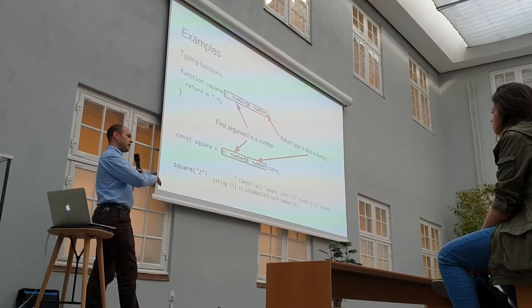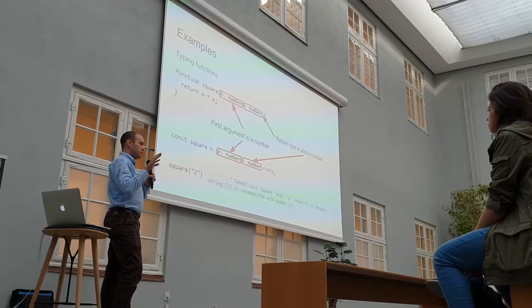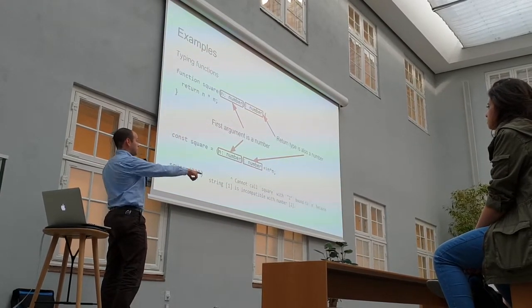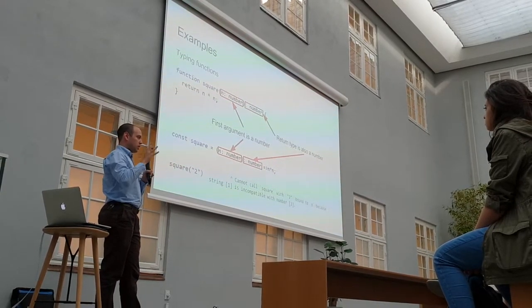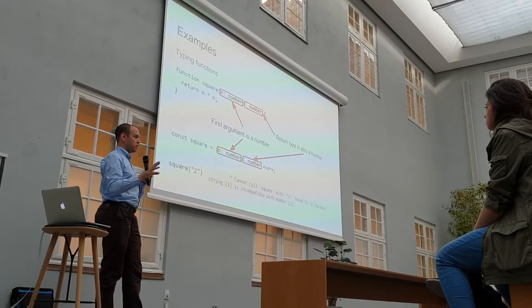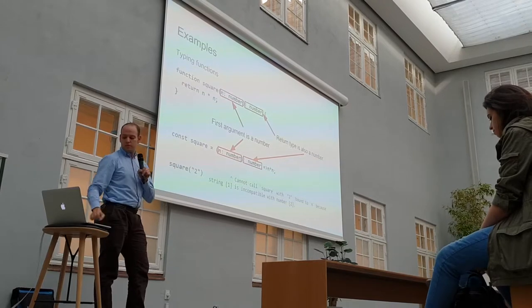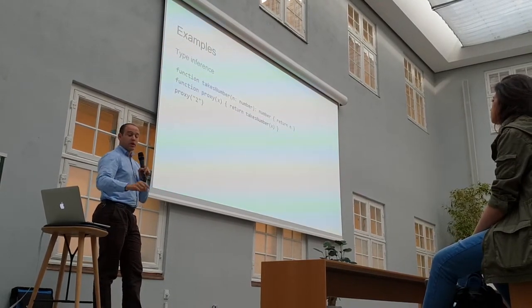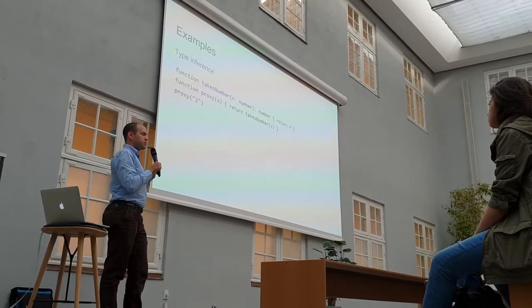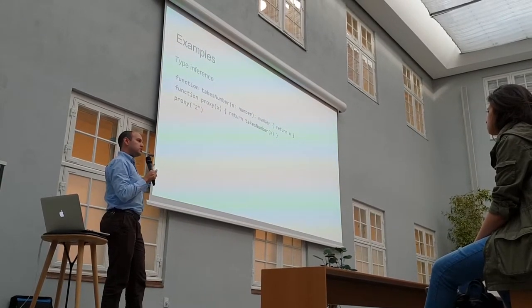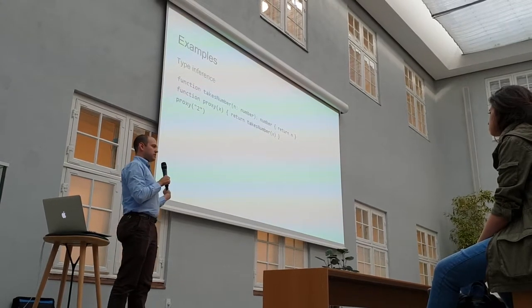So if Flow doesn't complain, then you have reason to believe you are reasonably sure that what you're doing makes sense from a type perspective. Now this doesn't mean that you're sure your code is correct—that's a logic problem, there's no tool in the world that can solve that. But at least you will know that you're using code as intended.